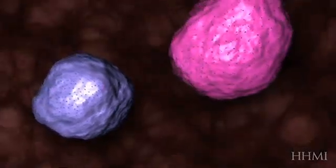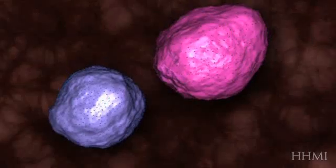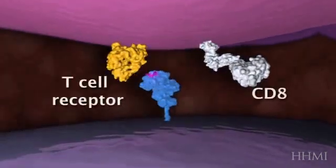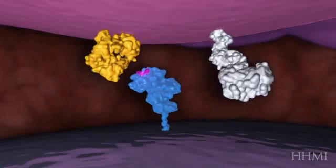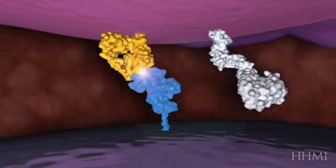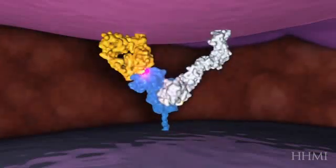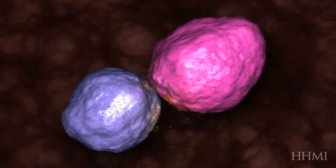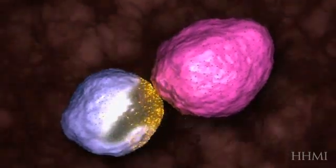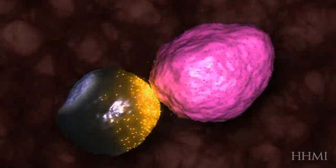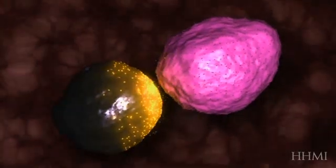It contains foreign protein. A cytotoxic T cell comes along, and if it recognizes foreign viral protein in an MHC class I molecule, the T cell receptor on the cytotoxic T cell will directly engage through conformational recognition along with the CD8 molecule, leading to the release of granzymes and perforin that kill the virus-infected cell.